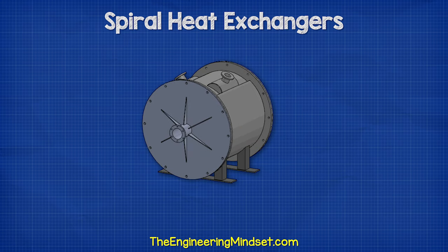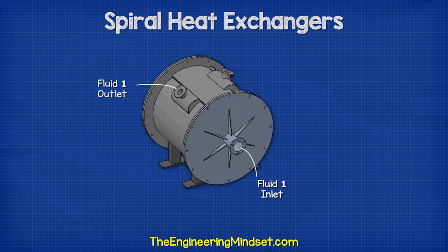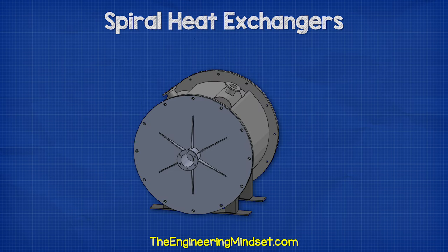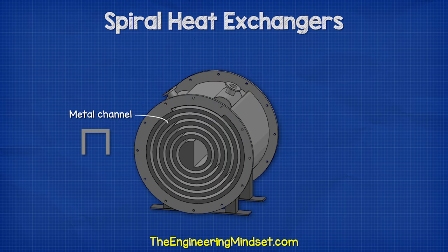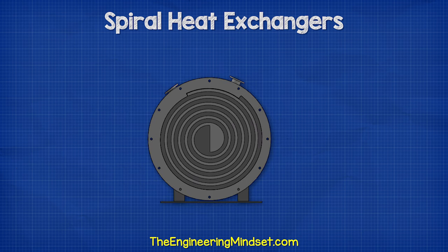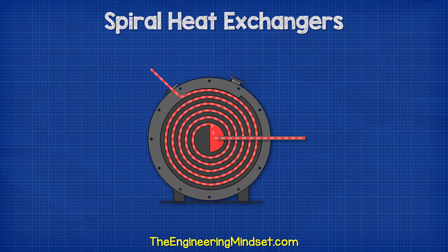Spiral heat exchangers look something like this. We have a flanged inlet on the front face with the outlet located on the top. Then we have an inlet from another fluid also on the top with the outlet located on the rear face. Behind the end plates, we find two sheets of metal inside which spiral together around the interior to form a channel which the fluids will flow through. The channel completely separates the two fluids. We see the first fluid enters the heat exchanger and fills the chamber, then flows around the channel and to the outlet.